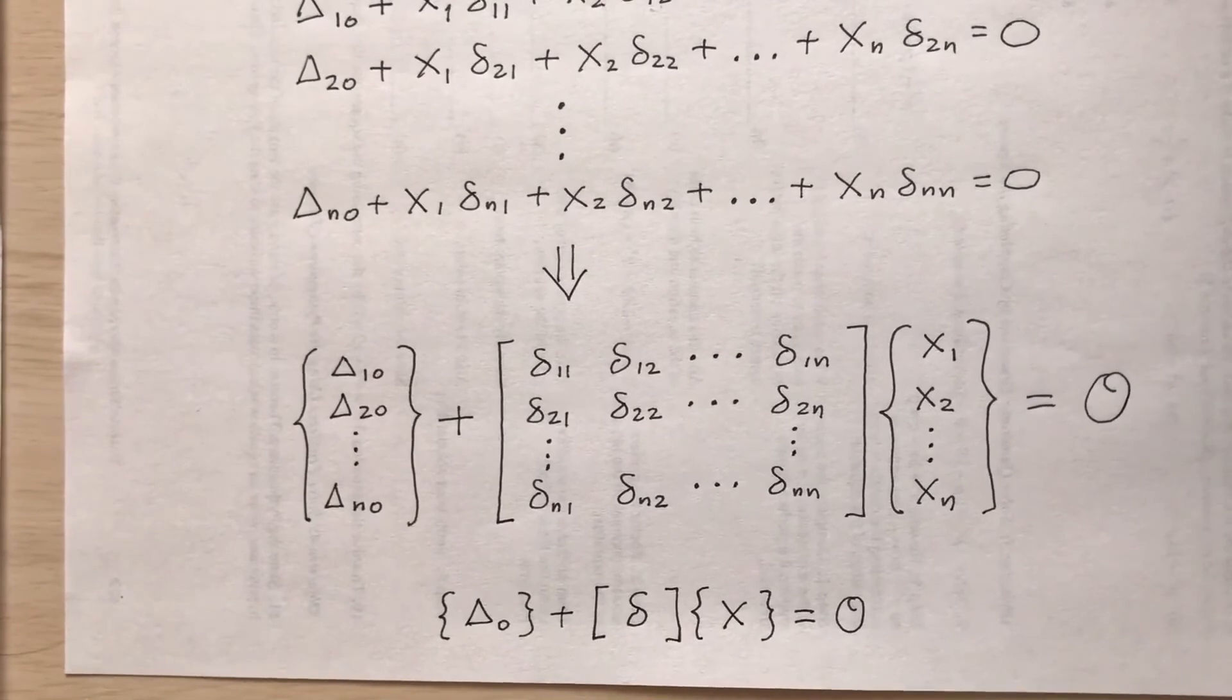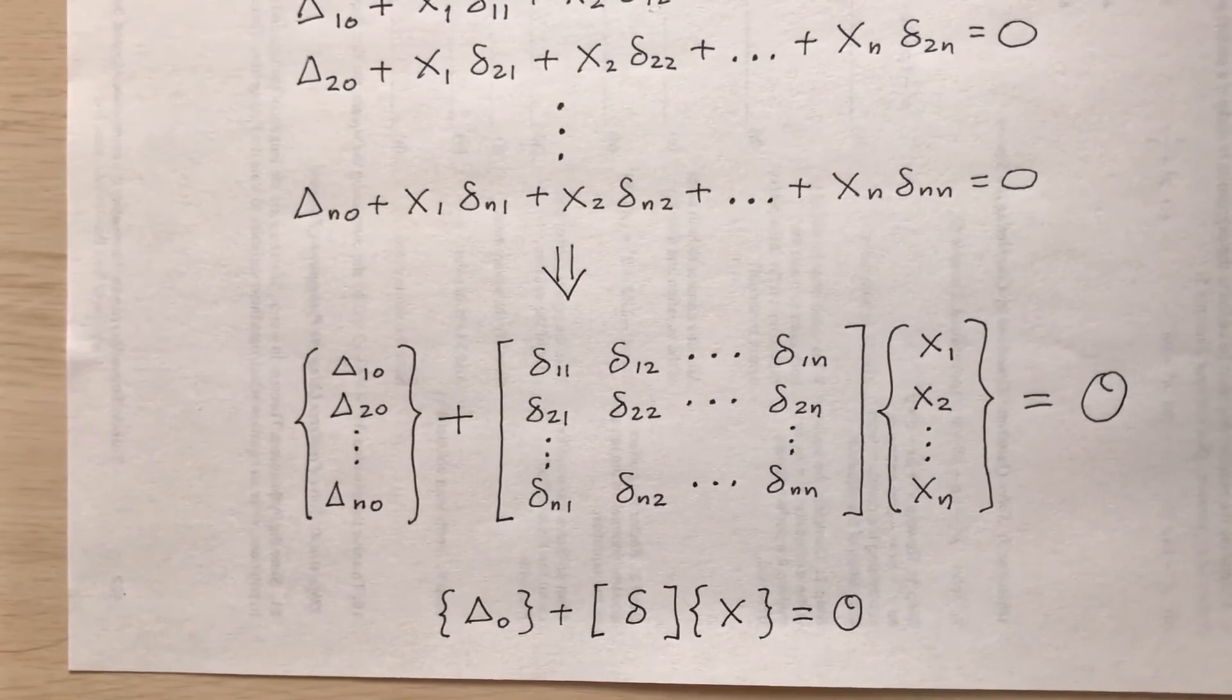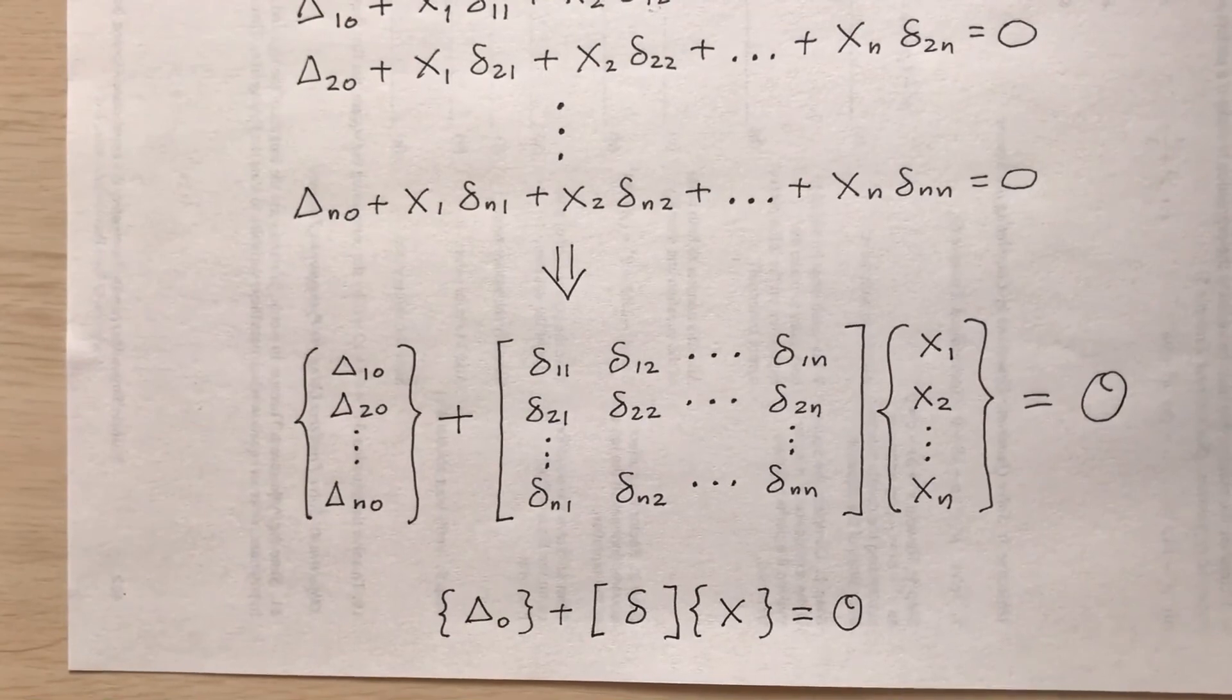If you really do have a high degree of indeterminacy in your structural system, your choice of redundance can have an effect on the level of difficulty, as well as the accuracy of the solutions. However, rarely do we use the method of consistent deformations, also known as the flexibility method, for high degrees of indeterminacy. When you take a second semester of structural analysis, you'll learn better methods to deal with this.